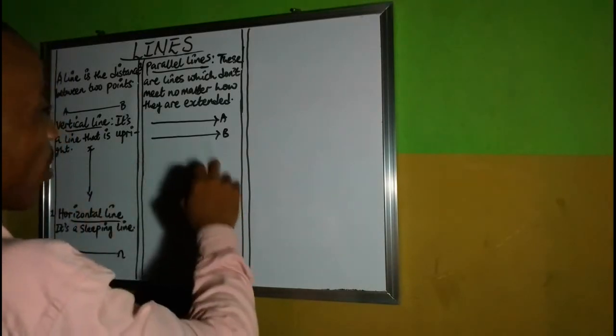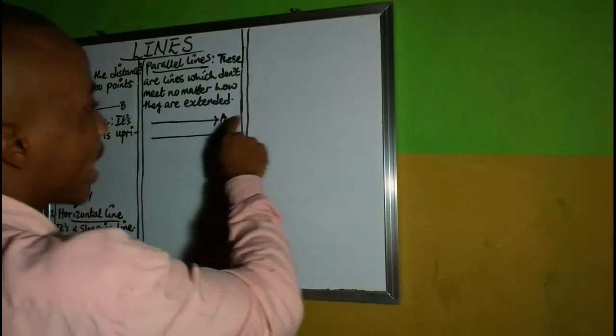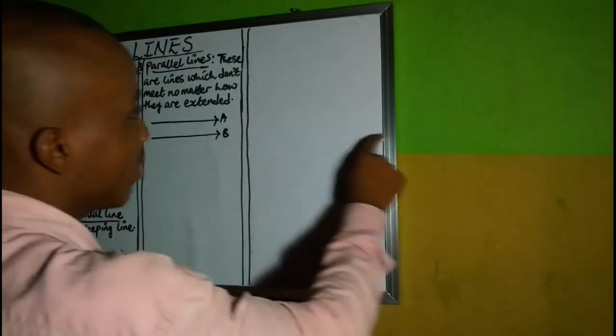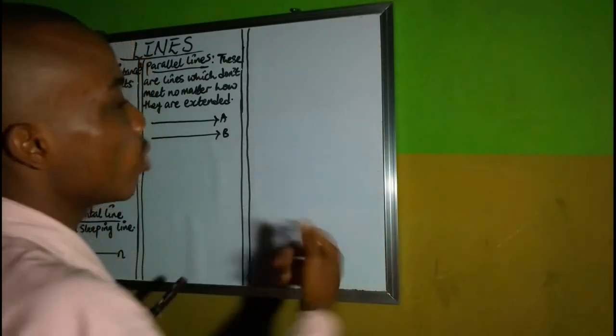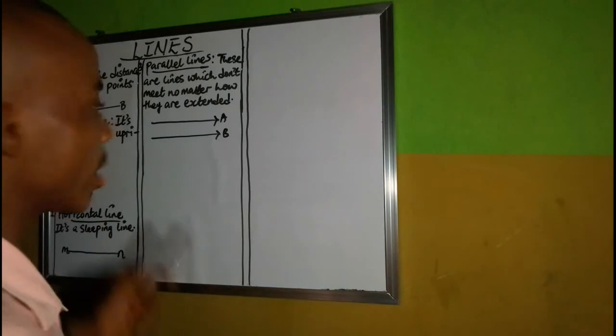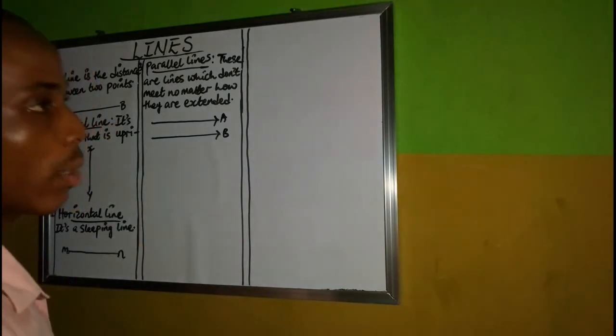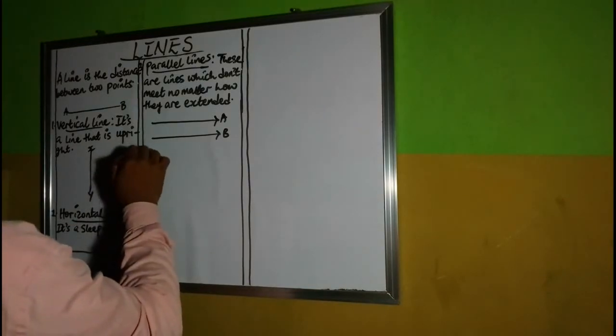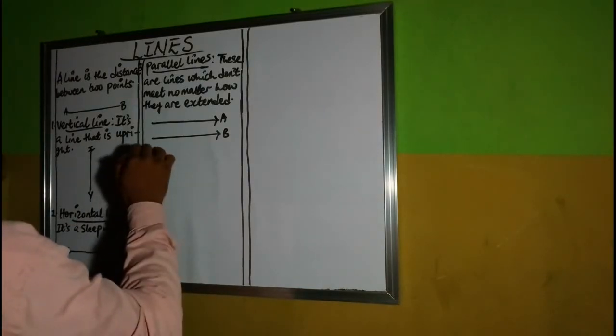If you observe, no matter how I extend line A or line B, they won't touch each other. This is the reason why they are called parallel lines. The next line you should keep in mind is a perpendicular line.